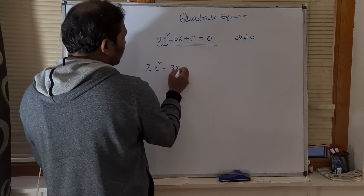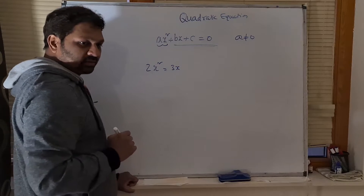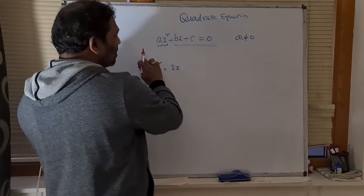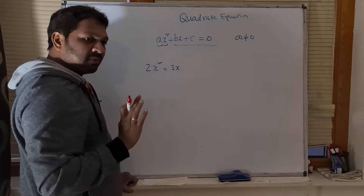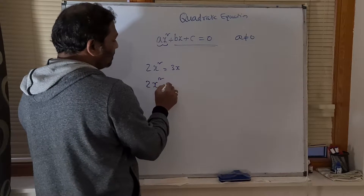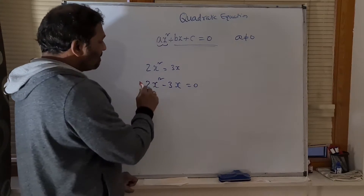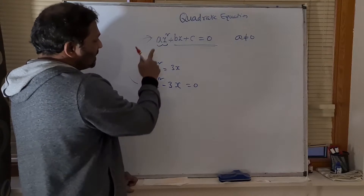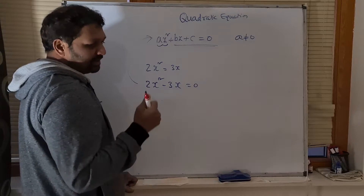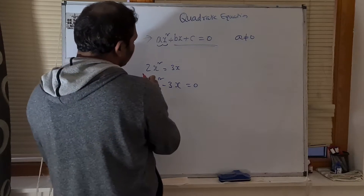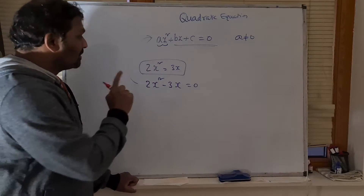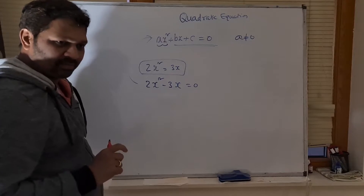2x² = 3x — is this a quadratic equation? Yes, it is a quadratic equation. Though it is not exactly in standard form, there is a possibility you can convert it. Let's convert: 2x² − 3x = 0. Comparing with Ax² + Bx + C = 0, what is A? 2. What is B? −3. What is C? 0. The equation can be given like this, but you must see an x² term somewhere.